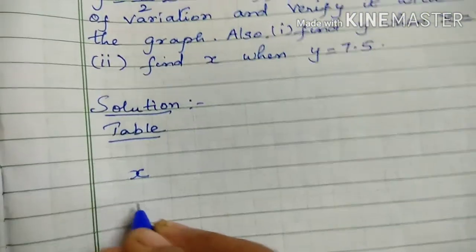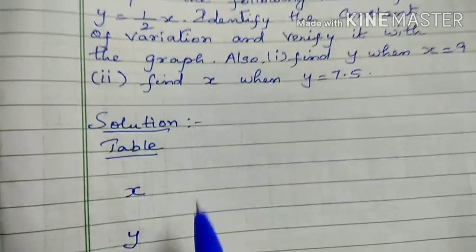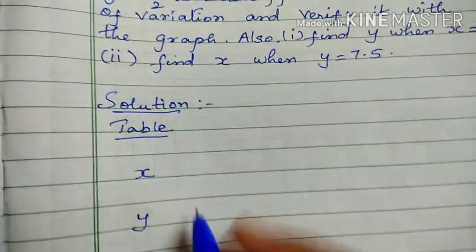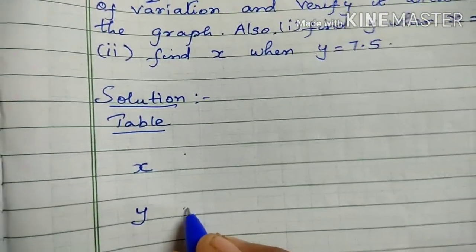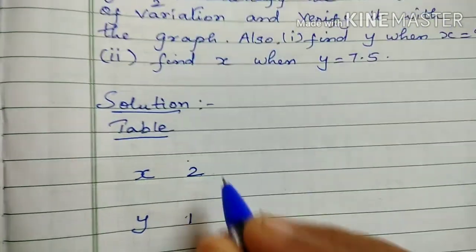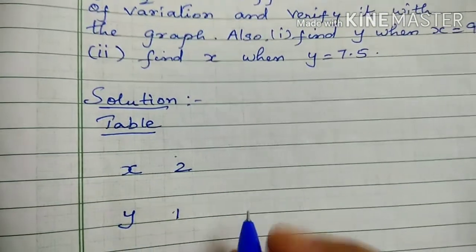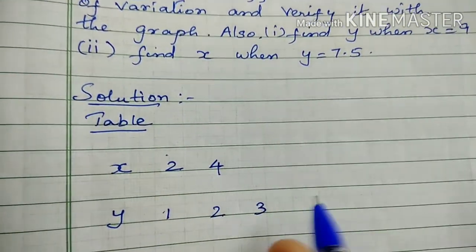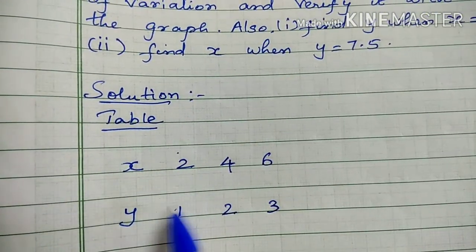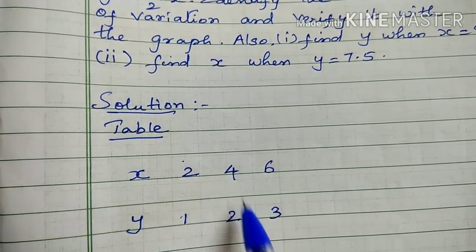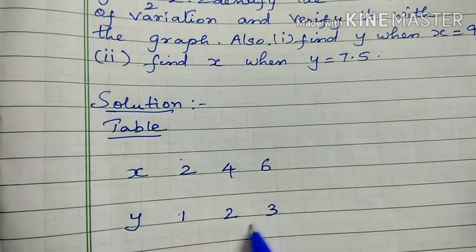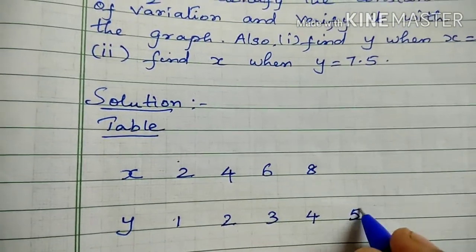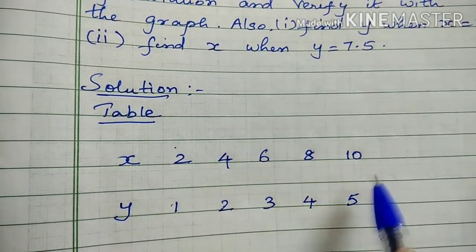The values are: x and y. k value is equal to y by x. If y is equal to 1, x is equal to 2; y by x equals 1 by 2. If y is equal to 2, x is equal to 4; 2 by 4 cancels to 1 by 2. If y is equal to 3, x is equal to 6; 1 by 2. Next: 4 and 8, then 5 and 10. If you divide, the answer is 1 by 2.